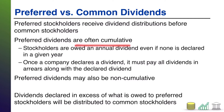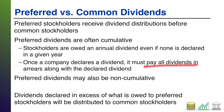Preferred dividends are often what we call cumulative, which means that even if a company does not pay out in any given year, the preferred stockholders are entitled to that dividend. It keeps a running deficit of how much is owed but hasn't been paid yet, such that once a company declares a dividend, it must pay all the dividends in arrears along with the declared dividend — catching up for all those missed years on top of the current year. That's the idea of a cumulative dividend.